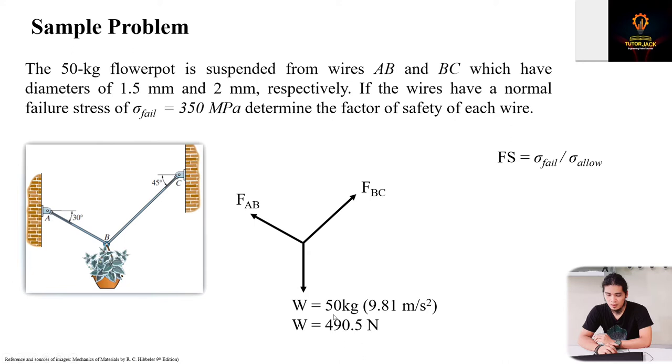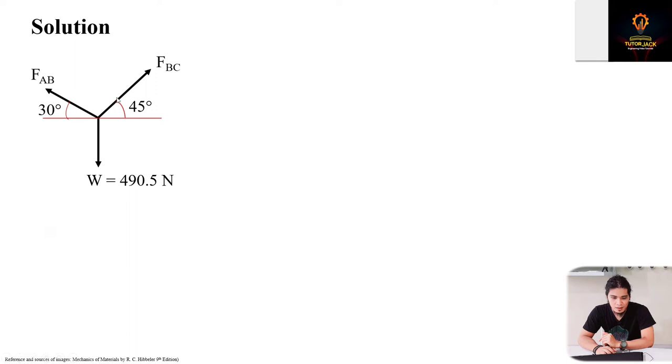To get the factor of safety, we need to find the allowable stress of each wire considering the weight they're carrying. Weight is 50 kilograms times the acceleration due to gravity, 9.81 meters per second squared. The weight in newtons is 490.5 newtons.